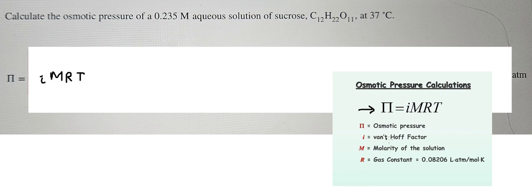The first thing is the van't Hoff factor. We have i equals 1 for this one, and M is the molarity which is 0.235. R is the gas constant, 0.08206.